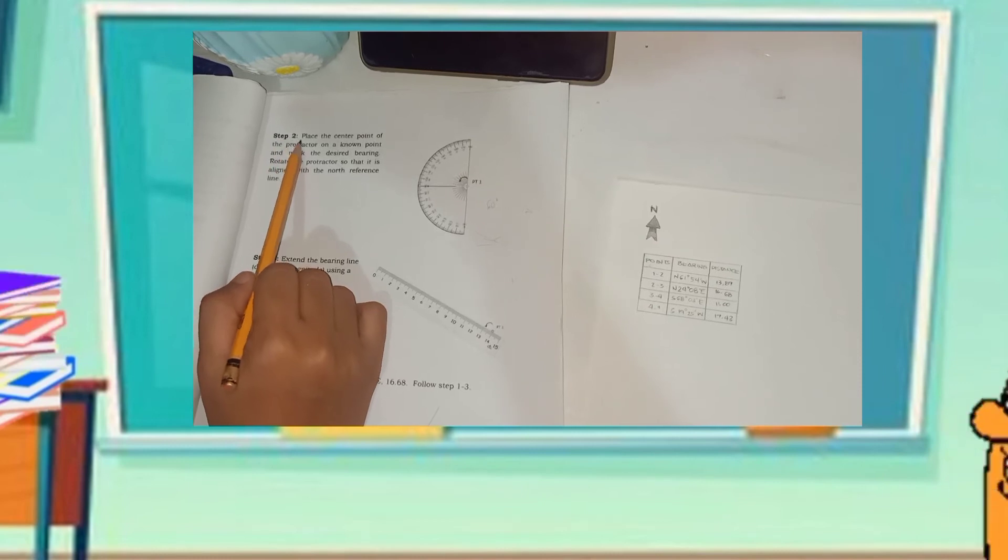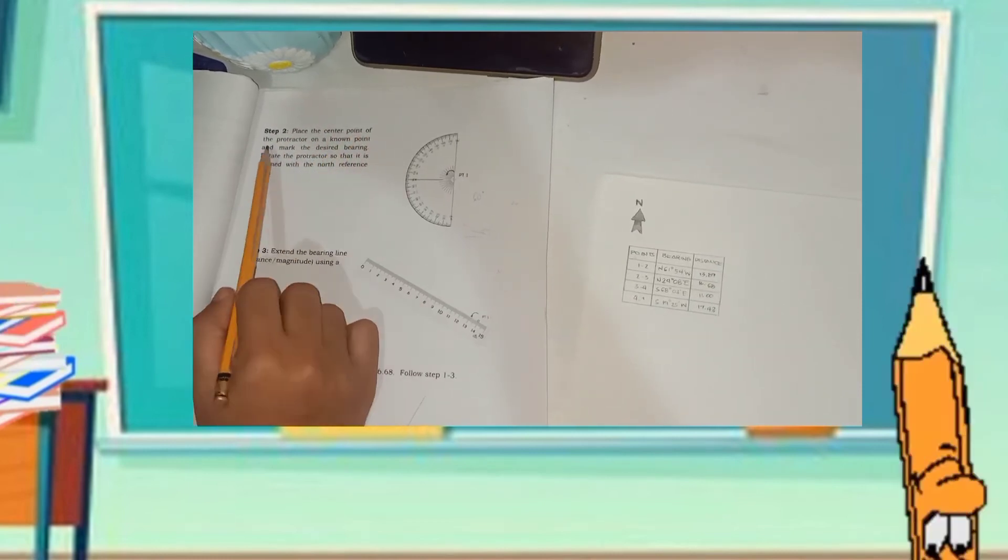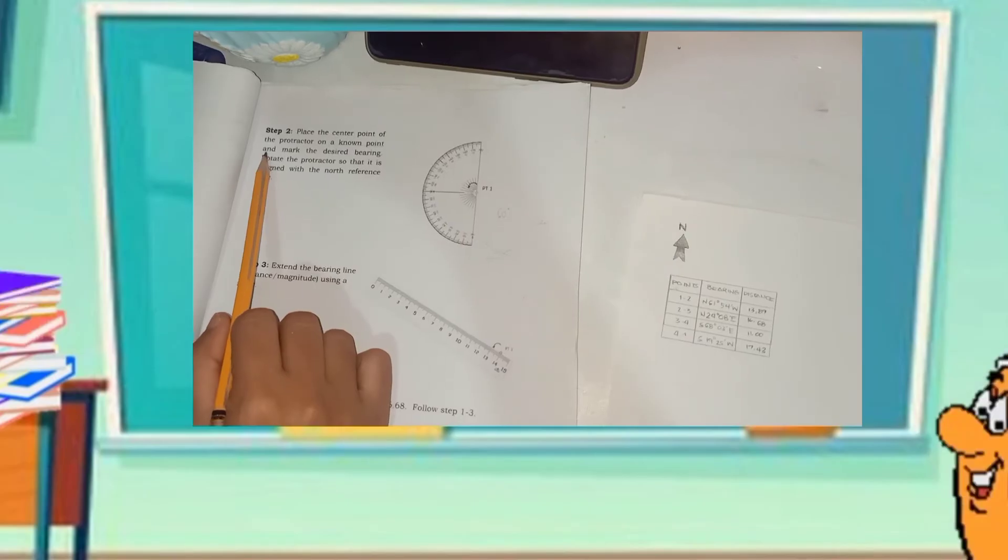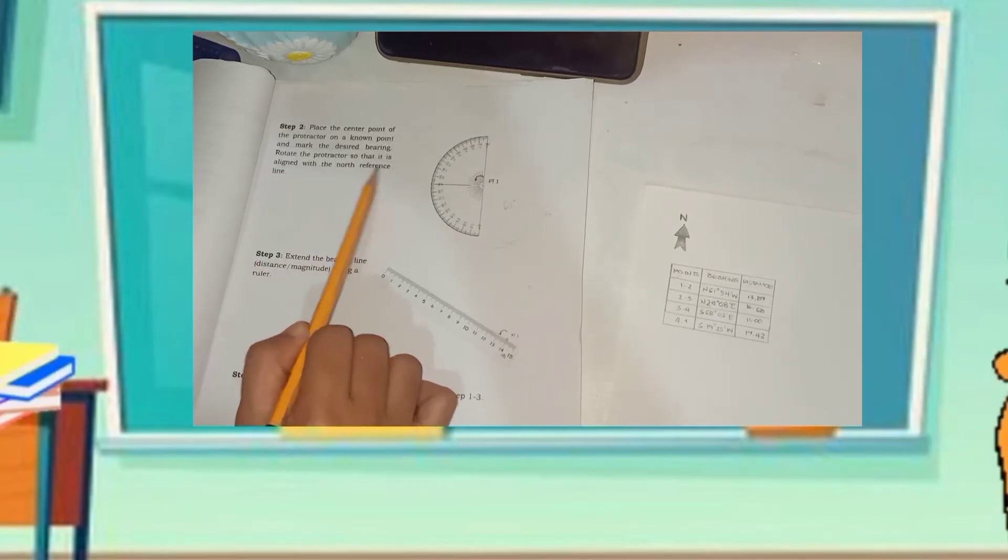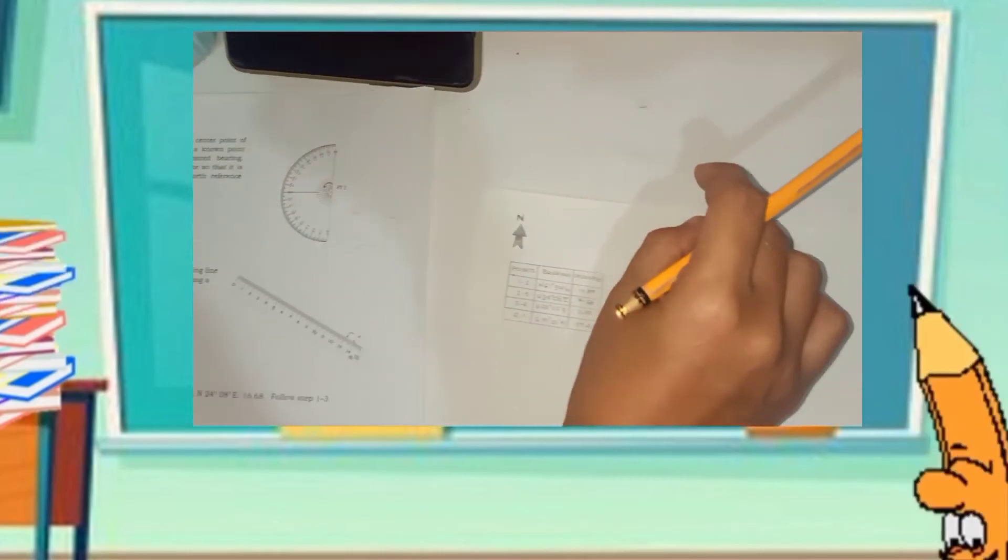Step number two, place the center point of the protractor on a known point and mark the desired bearing. Rotate the protractor so that it is aligned with the north reference line.